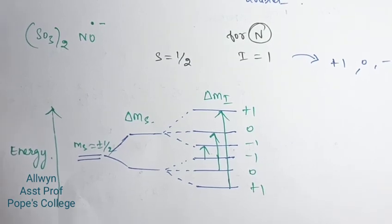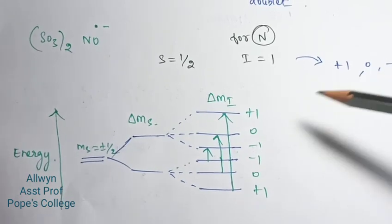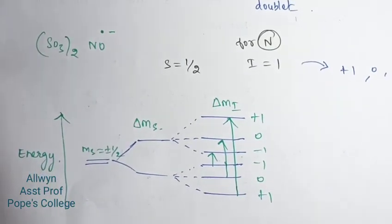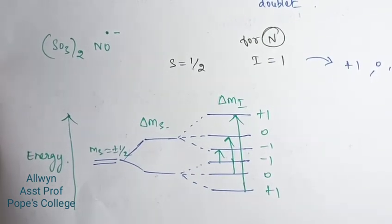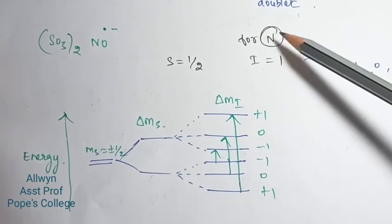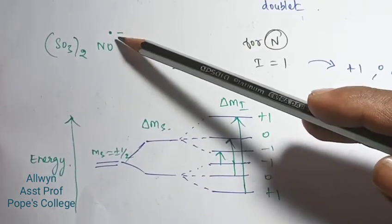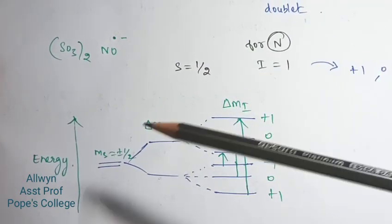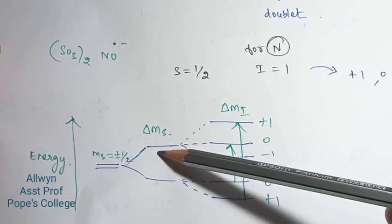SO3•2- / NO is a radical ion. Which nucleus is ESR active? Nitrogen is active. For nitrogen, the I value is 1, and there is one single unpaired electron. That is why we have plus half and minus half — the magnetic field causes splitting.